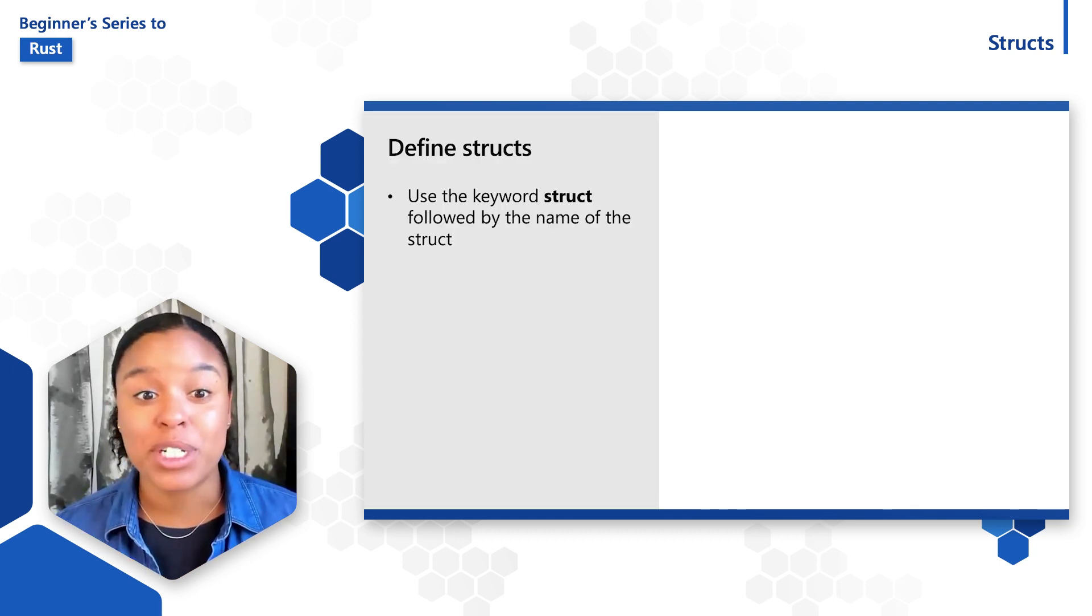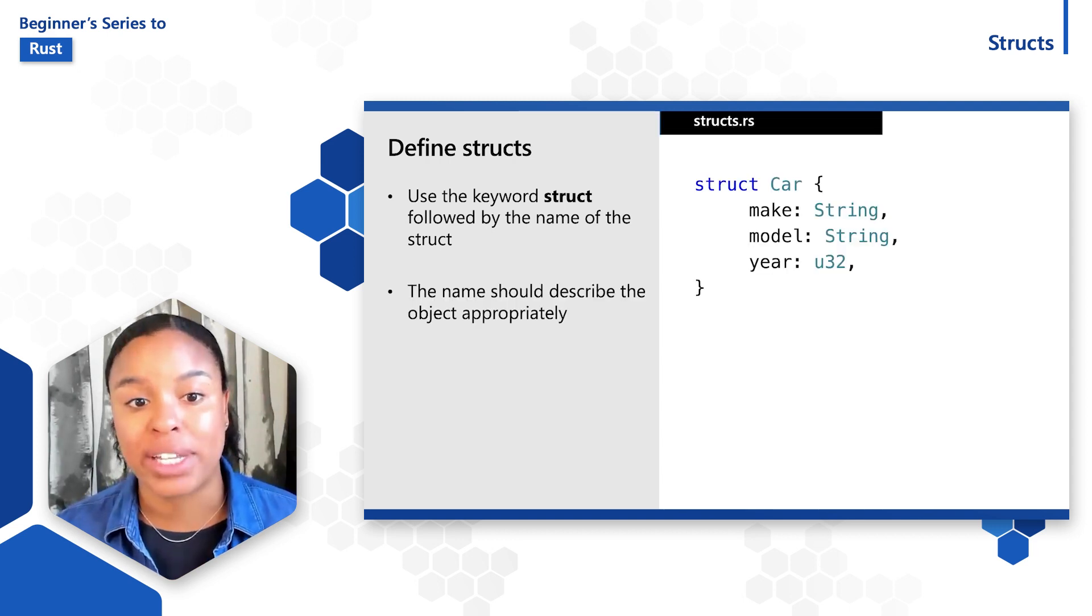To define a struct, the keyword struct is used followed by the name of the struct. The name should describe the object appropriately so that it relates to the data being grouped together.